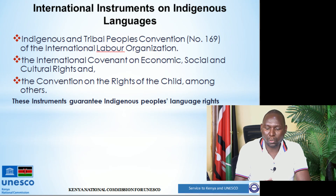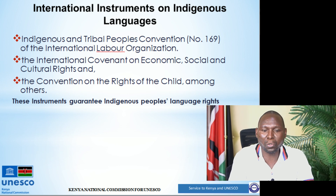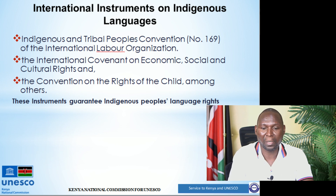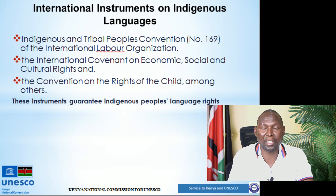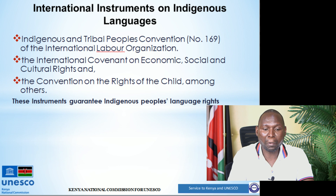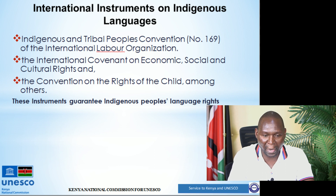There are also other UN international instruments on indigenous languages. These include the Indigenous and Tribal Peoples' Convention No. 169 of the International Labor Organization, which talks about how states need to guarantee indigenous peoples' language rights. Others include the International Convention on Economic, Social, and Cultural Rights, and the Convention on the Rights of the Child, which also pronounces on indigenous peoples' language rights.